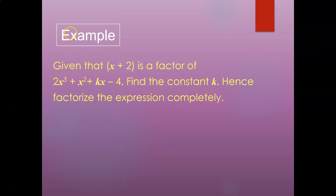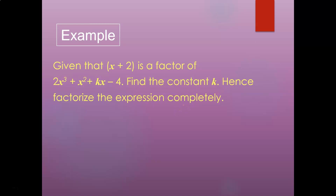Given that x plus 2 is a factor of this polynomial, find the constant k. Then, factorize the expression completely. Factorizing means you have to write the expression in bracket form. We have an extra step here — we need to factorize after finding k.